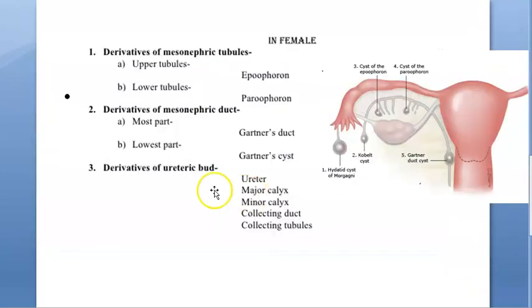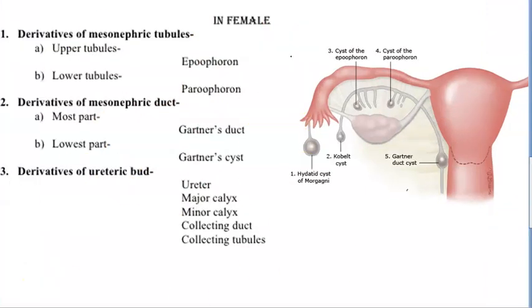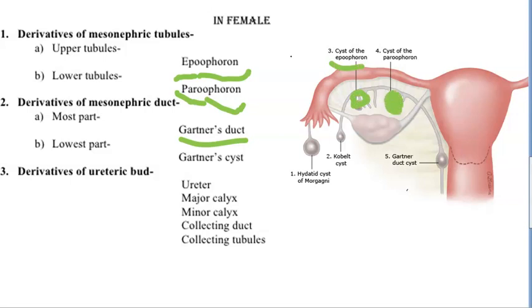Now let's move on. In females, what remnants will be there? You will find remnants like: epoophoron, paroophoron, and Gartner's duct. As marked here in the diagram — epoophoron, paroophoron, Gartner's duct. So these are the Wolffian remnants found in females.